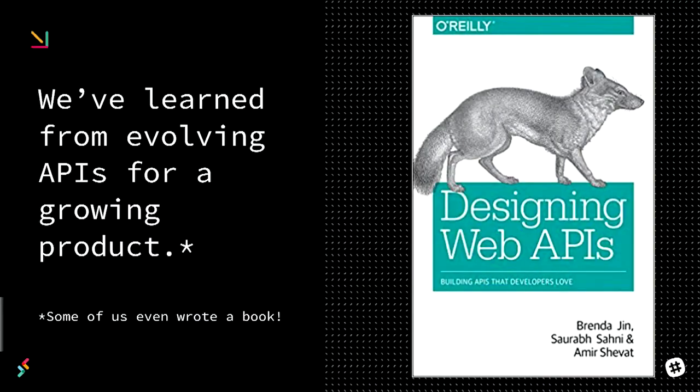We've actually learned a lot about evolving APIs for growing products. And Saurabh Sani, one of my coworkers who's with me — he'll help answer a Q&A at the end — and Amir Shavat. We've actually written a book about this, so check it out if you want to read more. It's coming out in September.